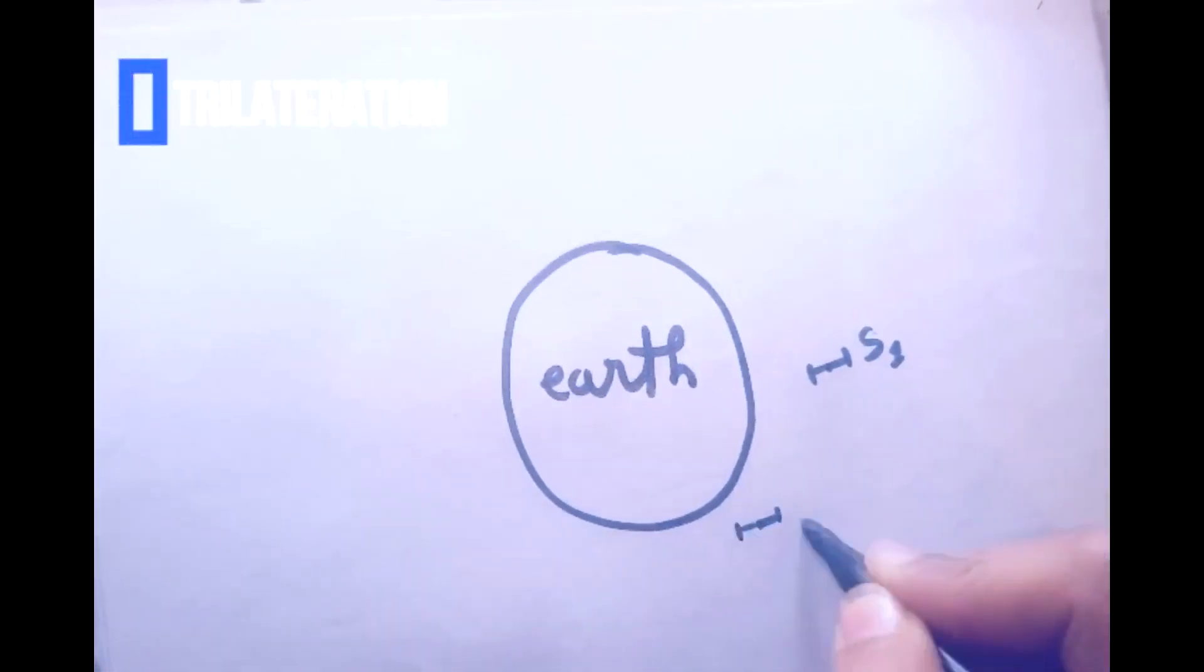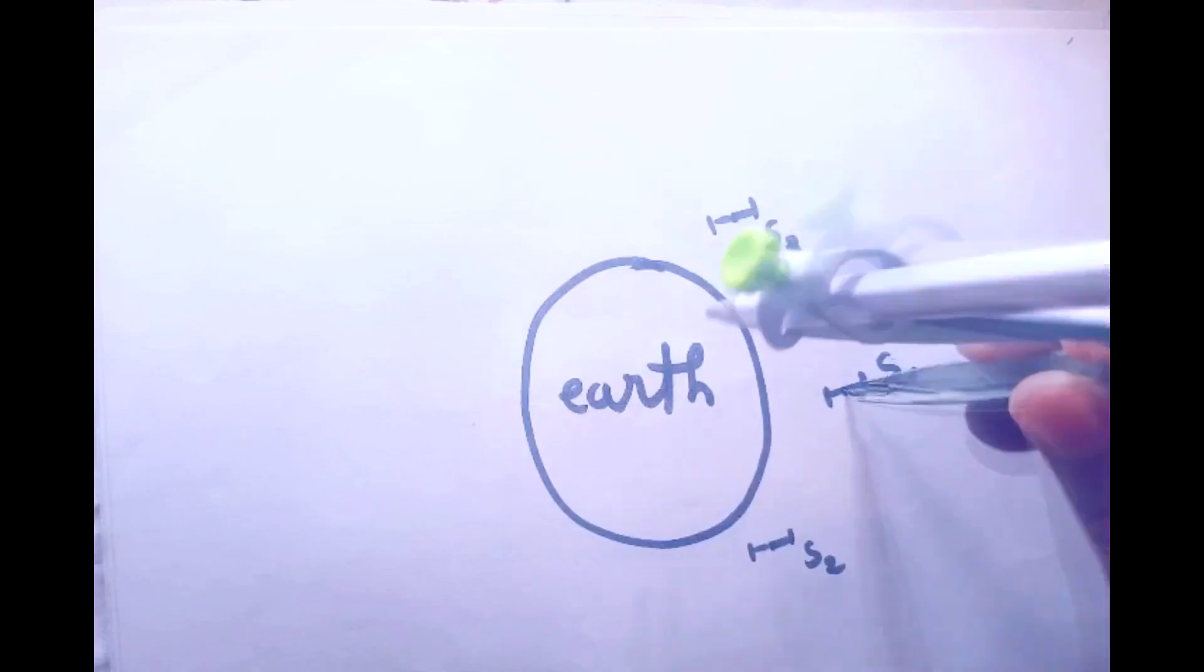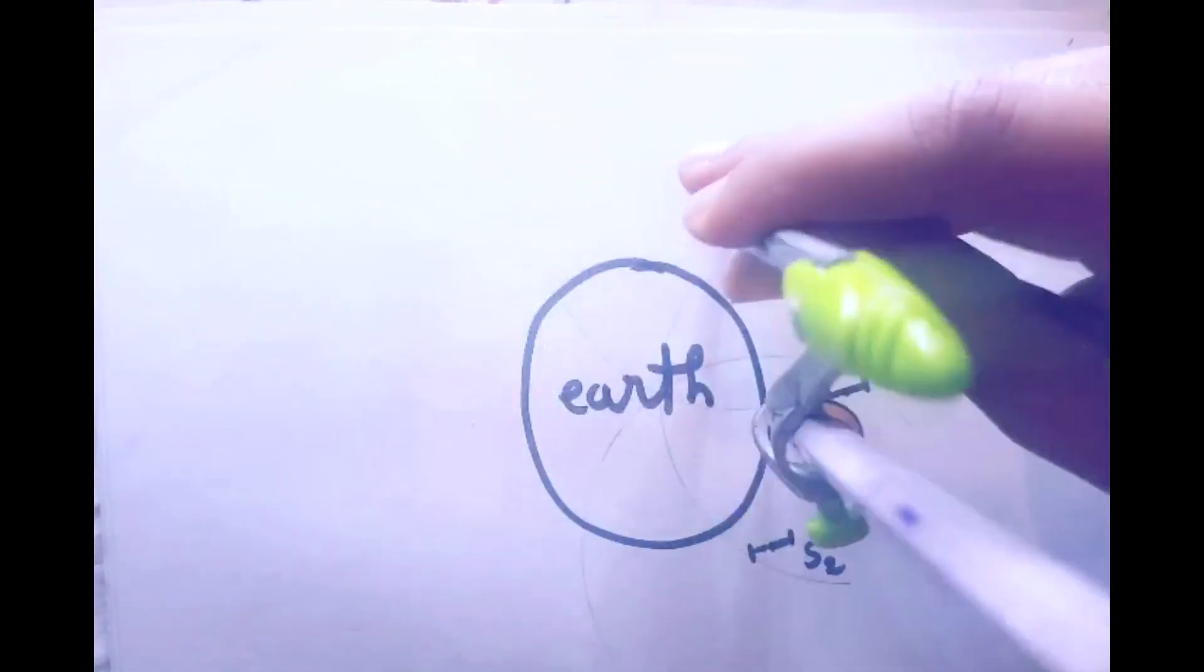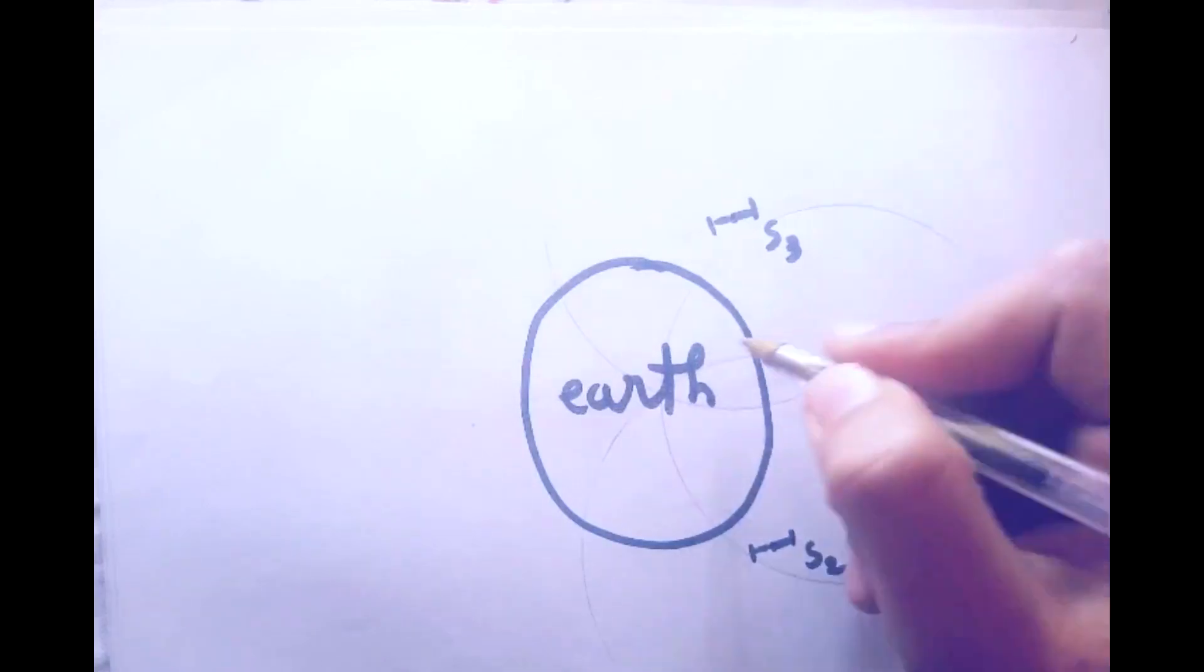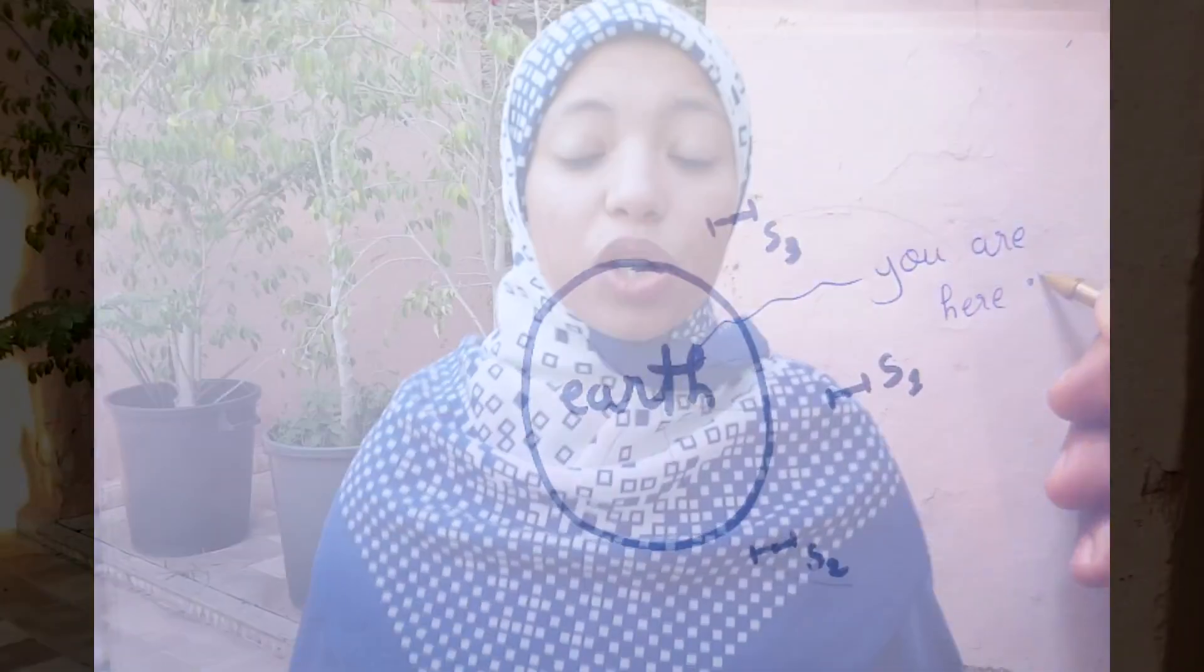Here is the Earth, and those are the three satellites. Each one of them has a range of X kilometers. By using trilateration, the point of intersection is your location.